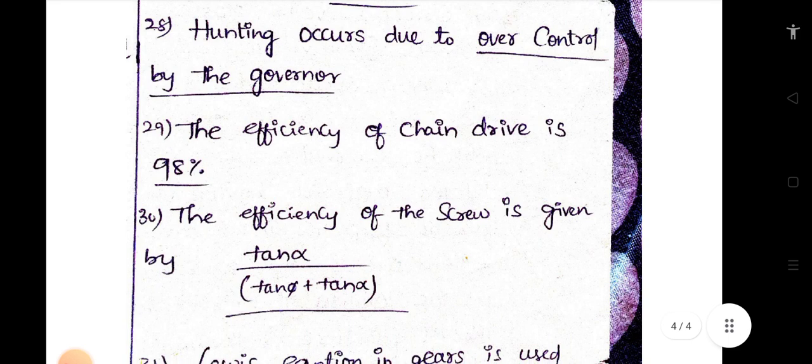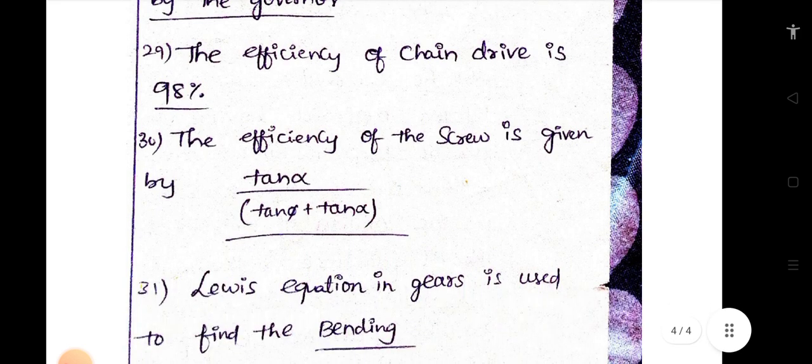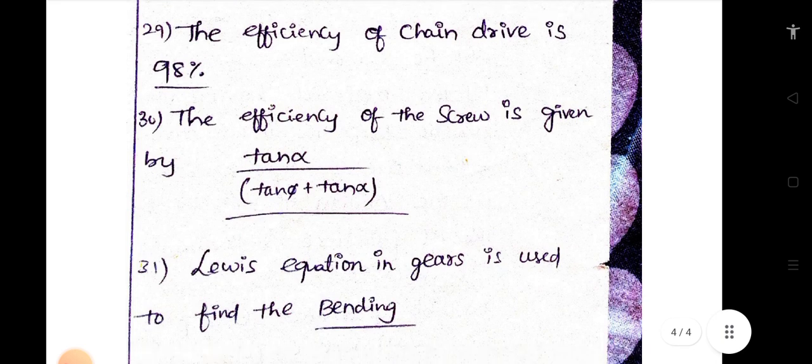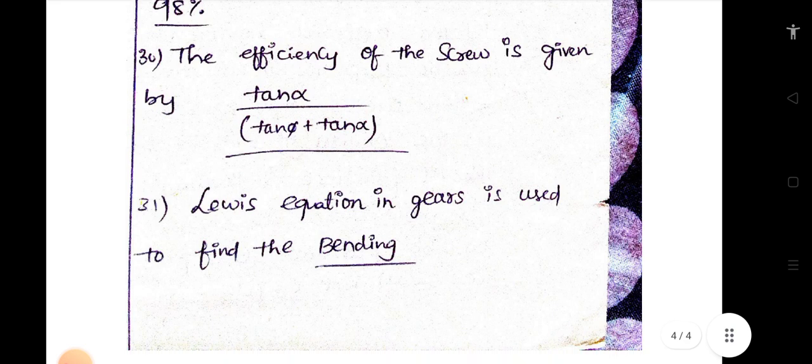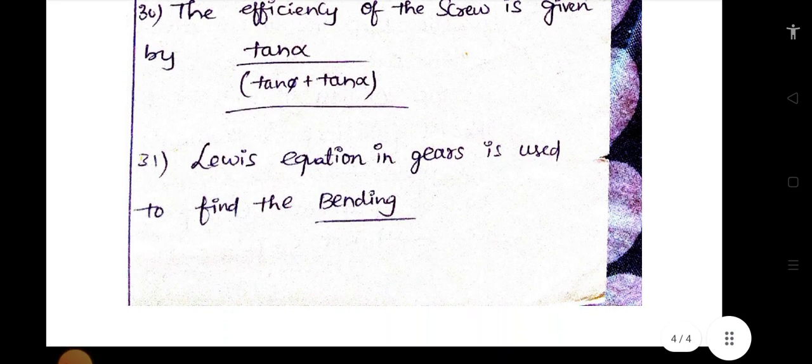The efficiency of chain drive is 98%. The efficiency of screw is given by tan alpha by tan alpha plus tan phi. Lewis equation in gears is used to find the bending.